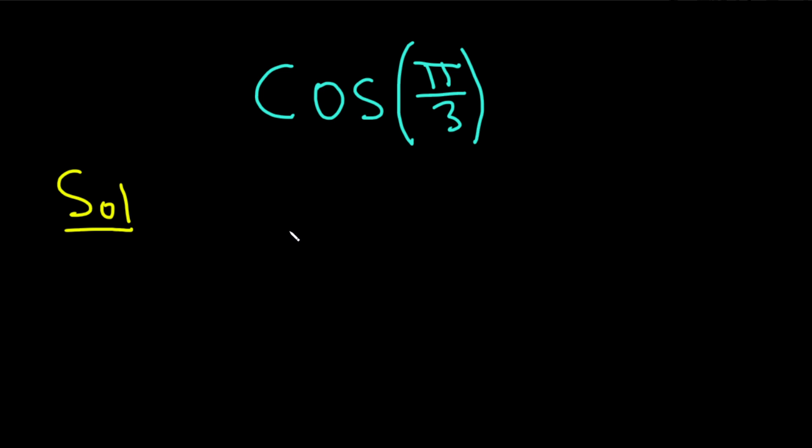So we're going to do this by using a triangle. The triangle looks roughly like this. And this is a right triangle, which means that this angle is 90 degrees. I'm going to write these angles here in radians. This is pi over 3, and this is pi over 6.